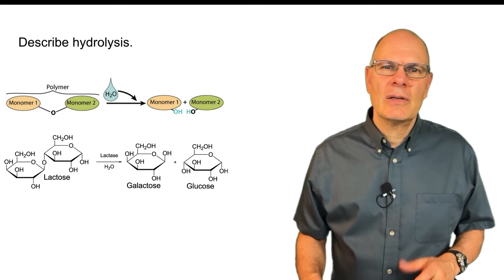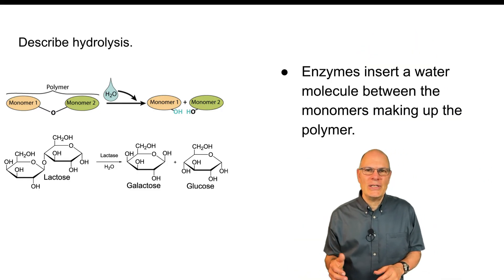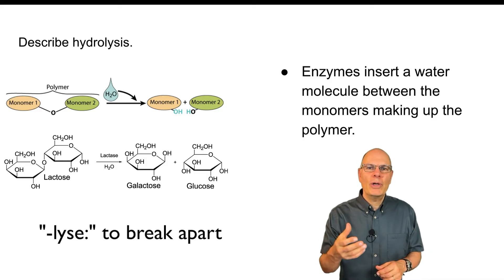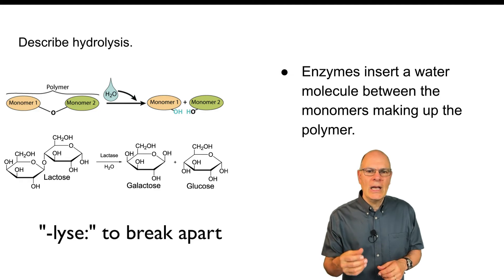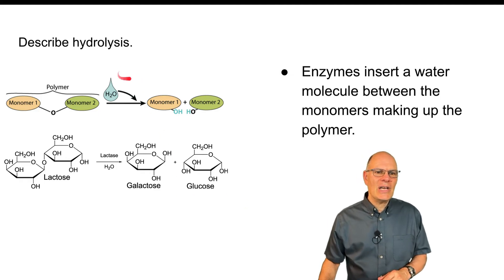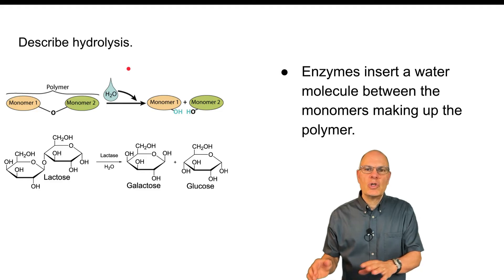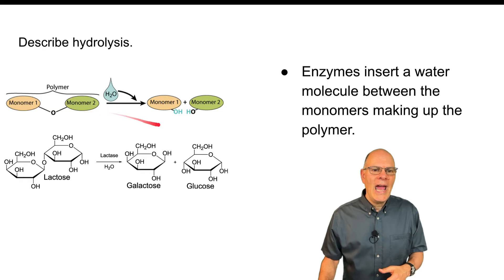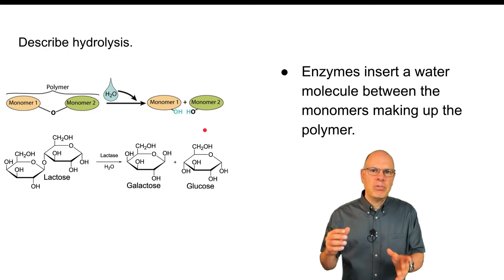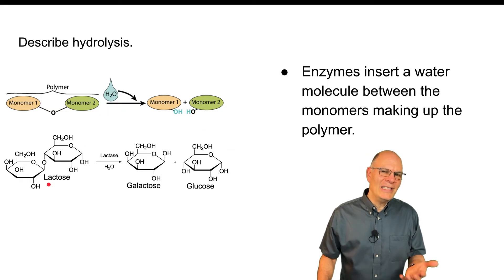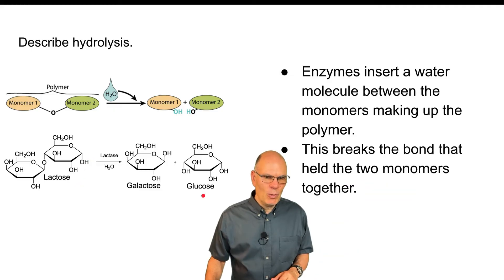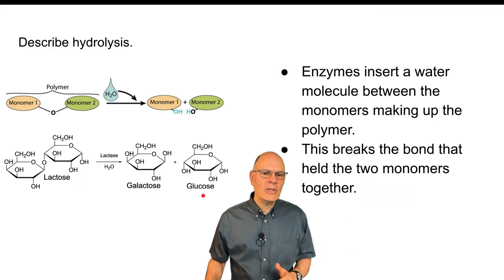What about hydrolysis? Hydrolysis is the opposite of dehydration synthesis. In biology, the suffix '-lysis' is very important, and it involves breaking. What happens in hydrolysis is that an enzyme inserts a water molecule in between the two monomers making up the polymer, and that breaks them apart. Here we have lactose, which is a disaccharide — a sugar made of two simple sugars bonded together. You add a water molecule and you get galactose and glucose.